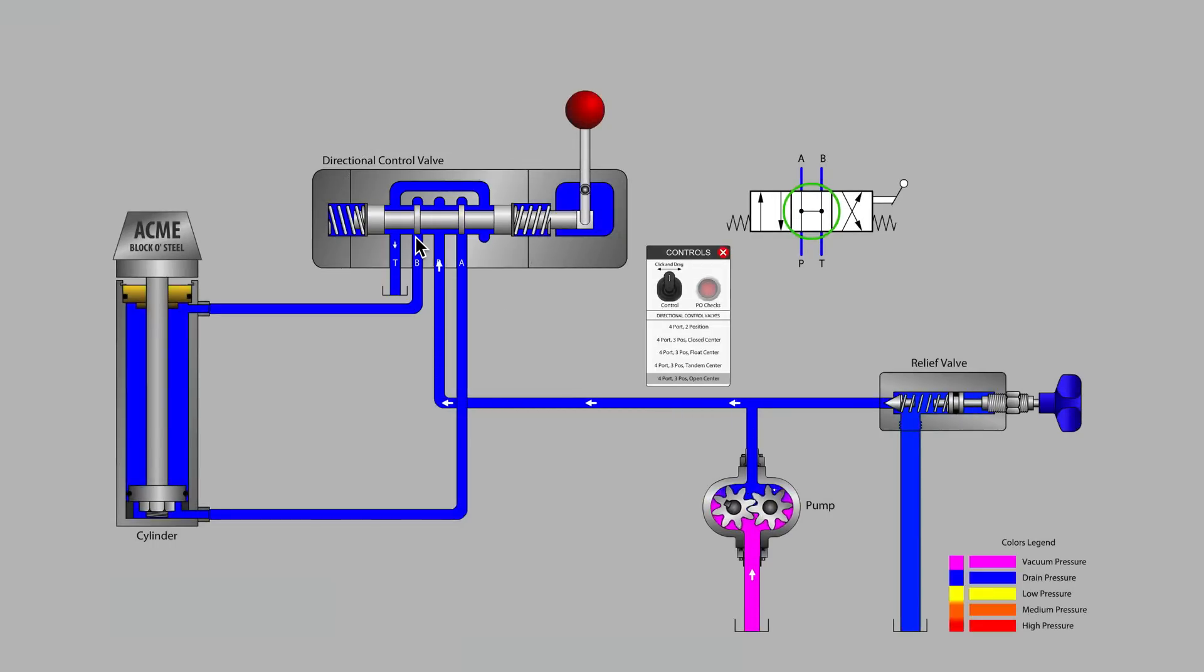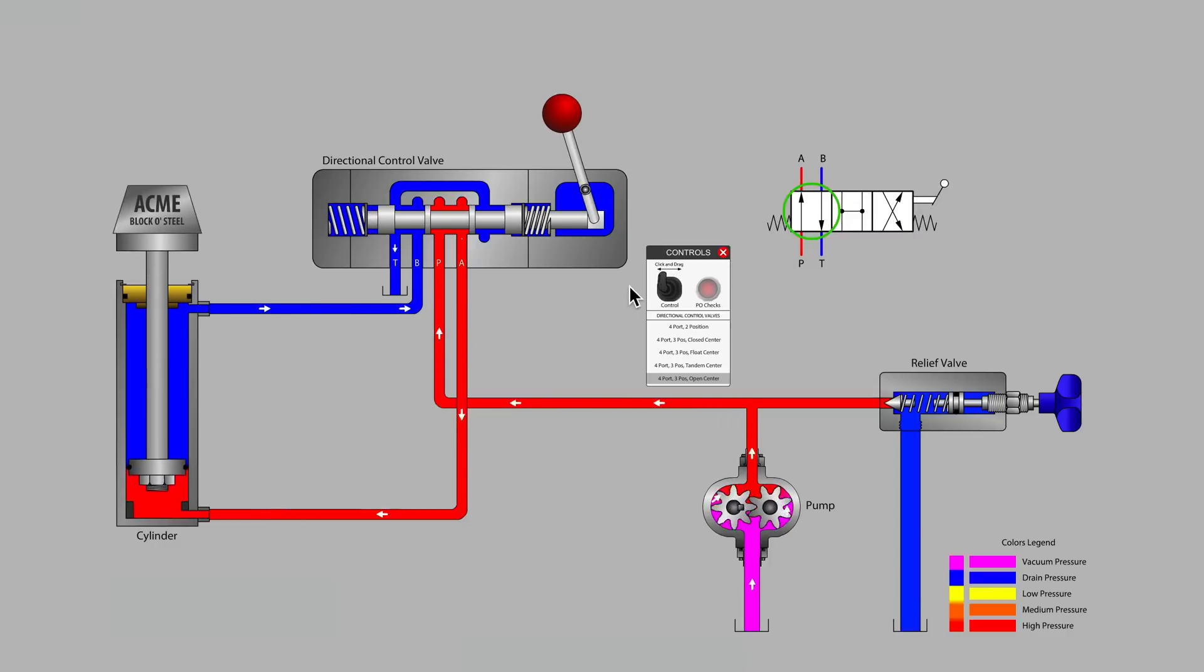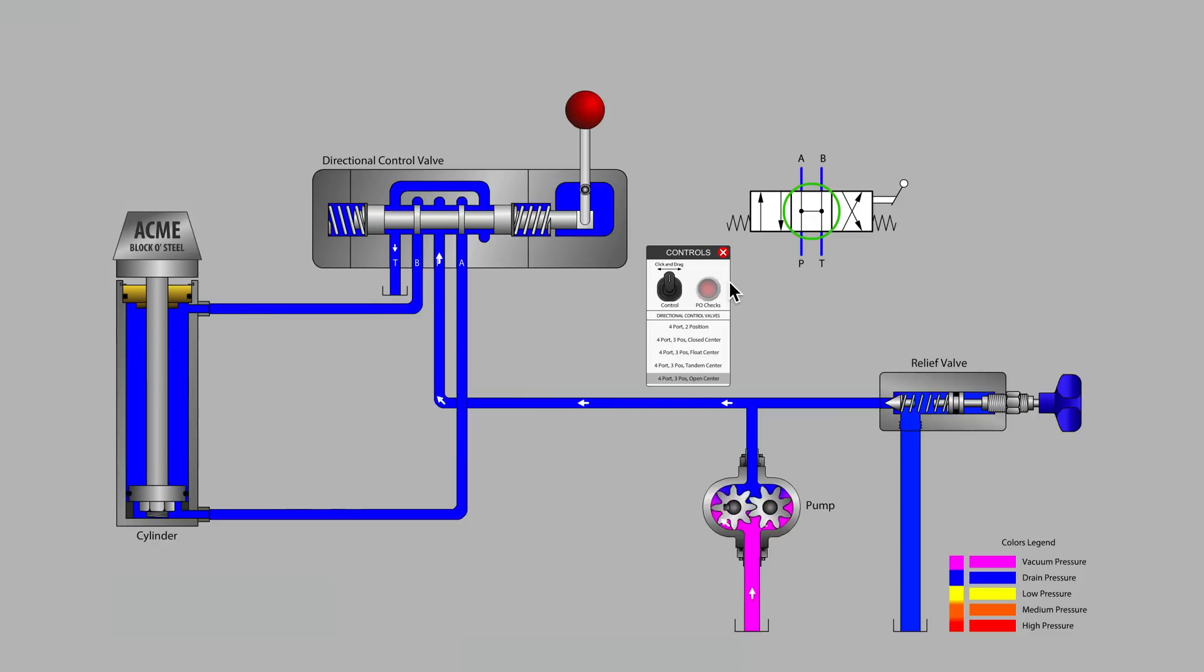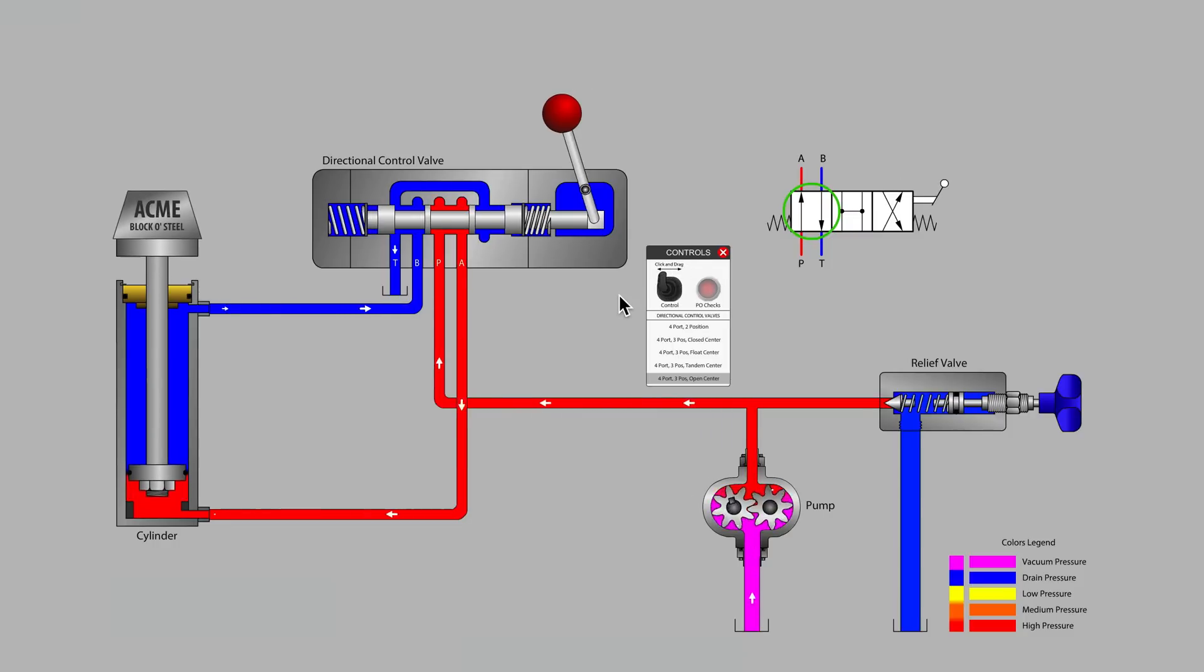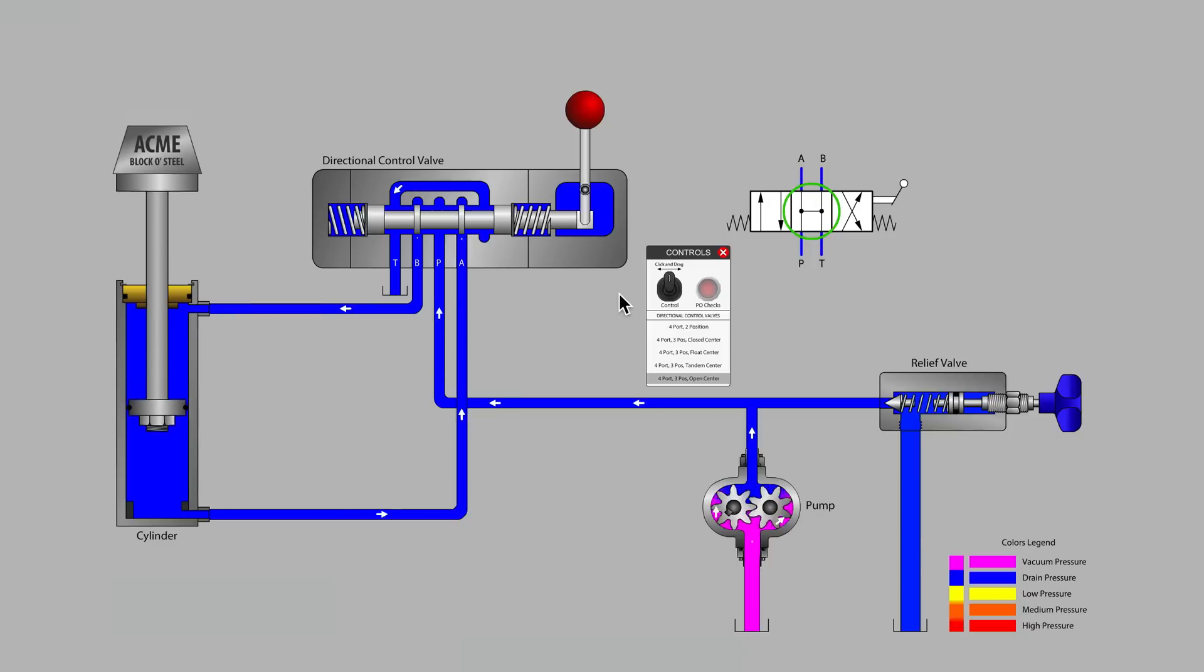To achieve cylinder motion, the valve spool must be moved all the way to the left or the right in order to direct the pump's flow to the A or B workport. While it is clear that this open center valve does not provide any position holding for the cylinder.